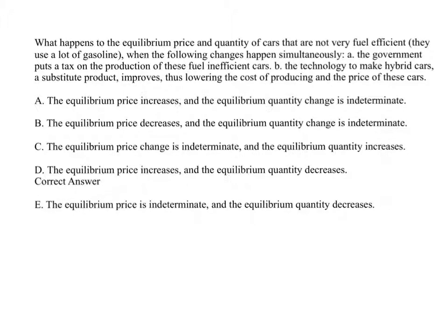The question asks what happens to the equilibrium price and quantity of cars that are not very fuel efficient — the ones that use a lot of gasoline — if these two changes take place. One change is that the government puts a tax on the production of these cars. The second change is that hybrid cars, substitute cars, see their production technology improve, which lowers the cost and lowers the price of those hybrid cars. But keep in mind we're looking at the changes for the equilibrium price and quantity of the not very fuel efficient cars.